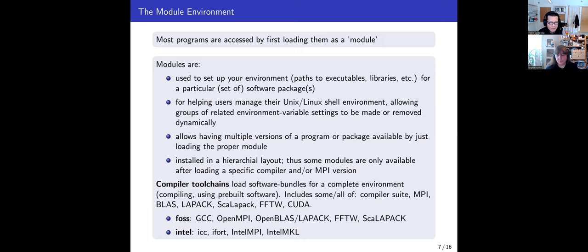Toolchains include the compilers themselves, MPI libraries, BLAS, LAPACK, ScaLAPACK, Fast Fourier Transforms, or CUDA. The two main ones are FOSS and Intel. FOSS uses GCC, OpenMPI, and OpenBLAS, etc. Intel uses the Intel compilers, Intel MPI, and MKL. You will need to load some of these before loading, for instance, NAMD, and we will look at that.